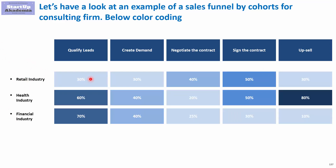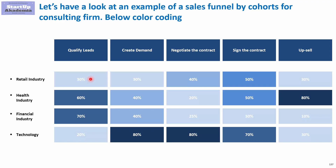Then we have the health industry, financial industry, and technology. As you can see, we can observe differences in conversion rates by stages. It's pretty obvious that something is happening in technology, because we have much higher conversion rates when it comes to creating demand, negotiating contracts, and signing contracts. This would suggest that either we have a very good product for this industry, or the person responsible is doing things in a totally different way. This cohort approach helps you identify differences and find the reason behind them to improve the process or product for other industries.